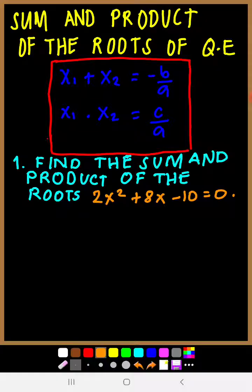The formulas are the following. The two roots, if you add them — x sub 1 plus x sub 2 — that is equal to negative b over a. When you multiply the two roots, x sub 1 times x sub 2, that is equal to c over a. x sub 1 and x sub 2 can be interchangeable.